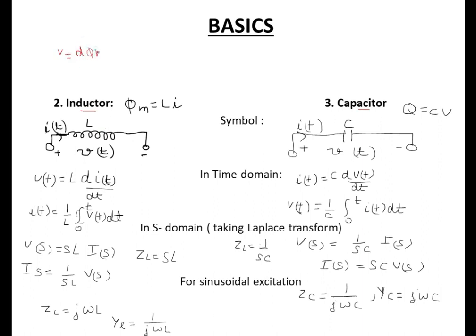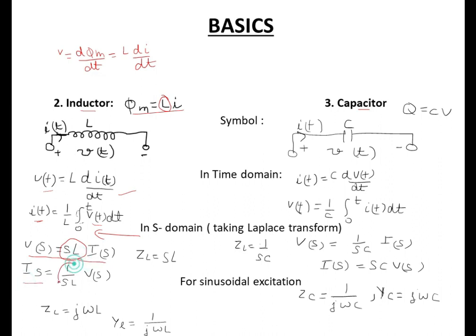Now we have the inductor. Voltage is equal to dψ/dt, and ψ is equal to Li. Since L is constant, we can write it as L di/dt. Therefore in time domain it is written as v(t) = L di/dt, and for i(t) you integrate (1/L)∫v(t)dt. In the S domain it is written as V(s) = sL·I(s), and I(s) = (1/sL)·V(s). Therefore impedance Z_L = sL and admittance = 1/sL. For sinusoidal excitation, put s = jω, so Z_L = jωL and admittance = 1/jωL.